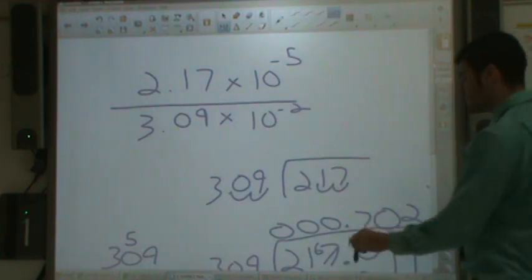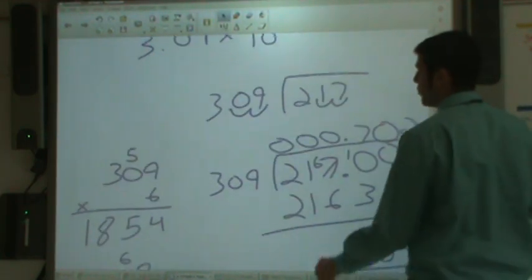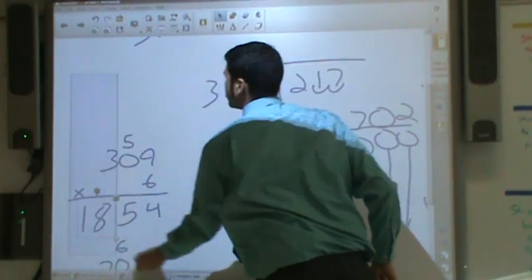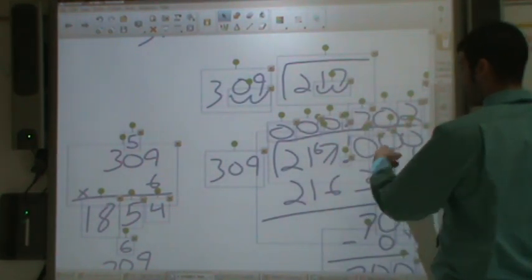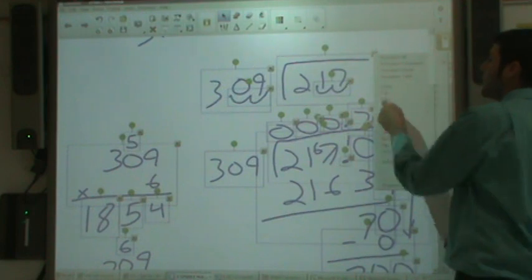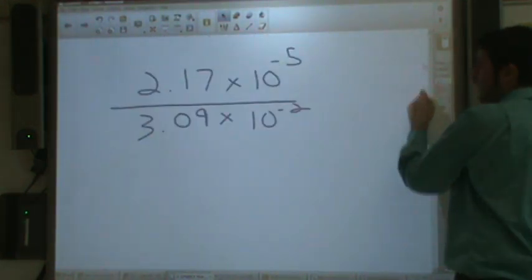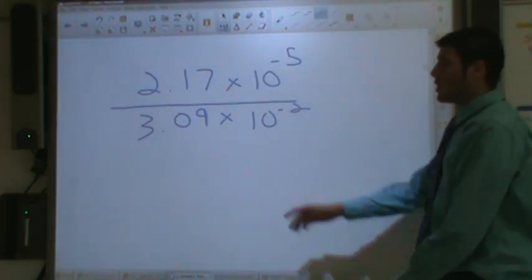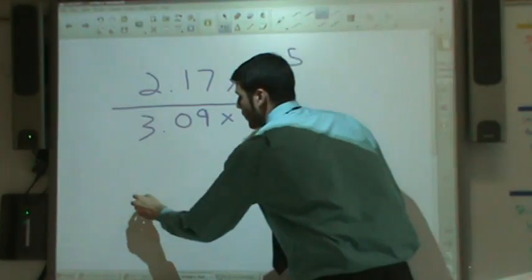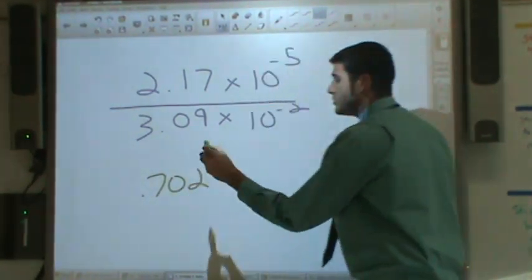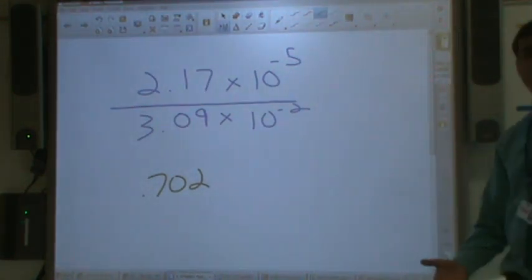0.702. So step one was to divide those two. We just did that. We got 0.702 as our answer. That was step one.